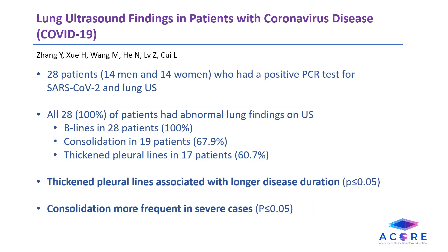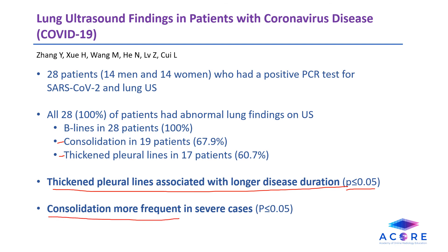Finally, this article looks at lung ultrasound findings in patients with COVID-19. They had 28 patients split evenly between men and women who had a positive test and lung ultrasound. All patients had abnormal lung findings and B lines. 19 patients or 67.9% had consolidation on ultrasound and 17 or 60.7% had thickened pleural lines. Thickened pleural lines were associated with longer disease duration, and consolidation was more frequent in severe cases. They concluded that lung ultrasound may be beneficial in monitoring and diagnosing patients with COVID-19 pneumonia.